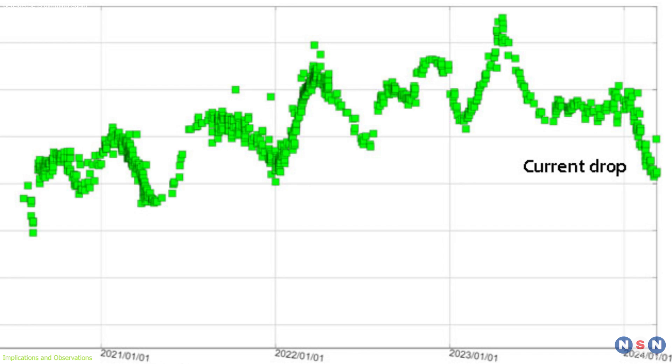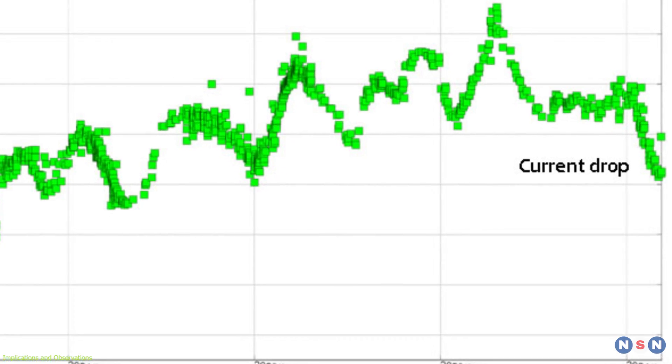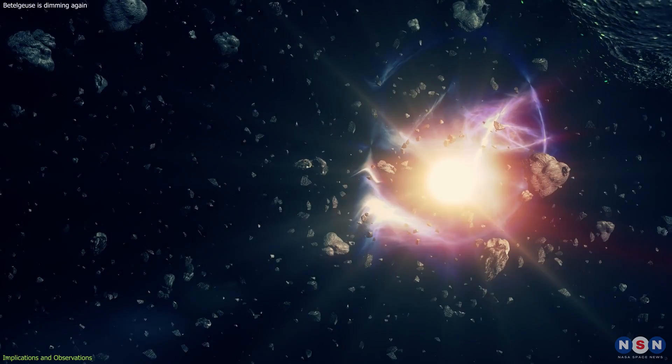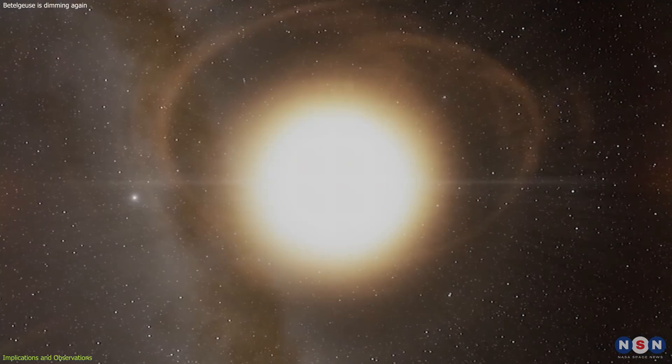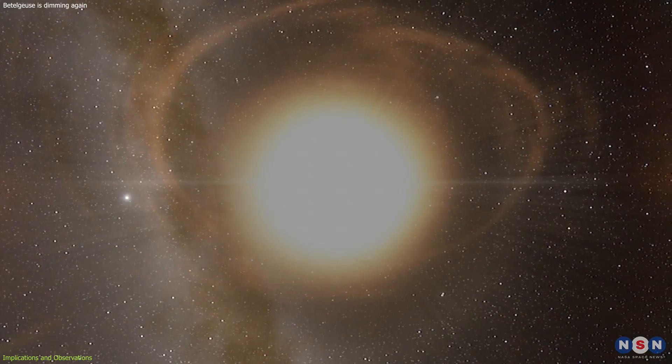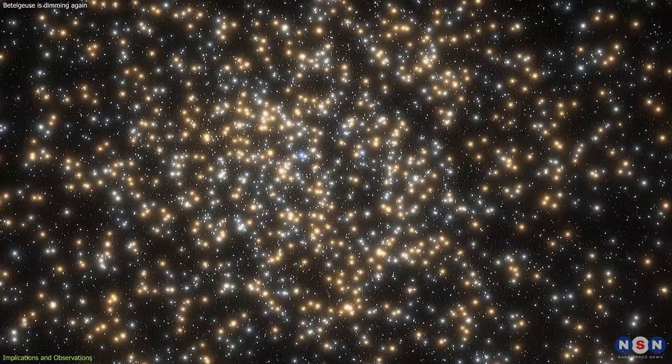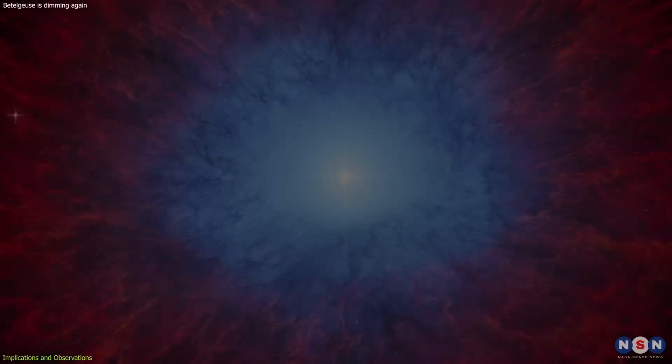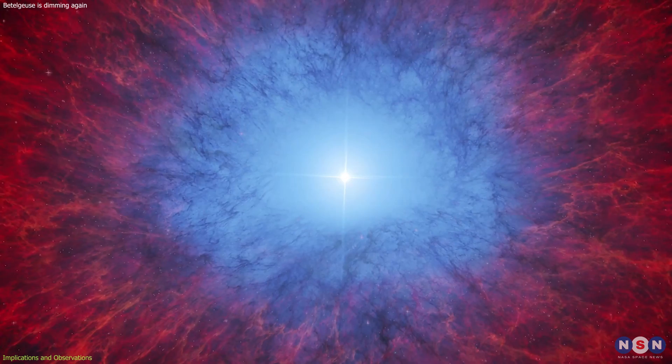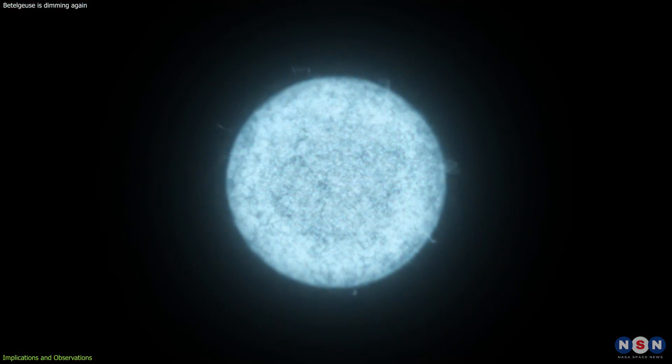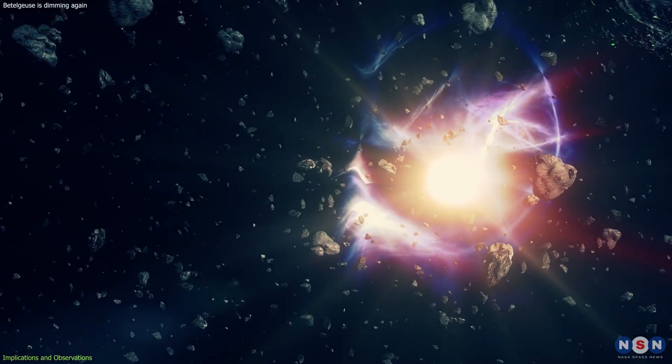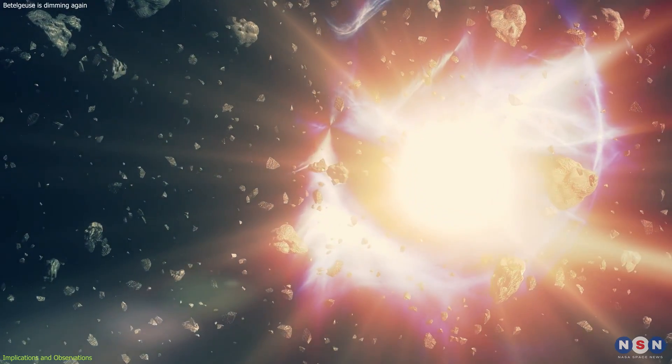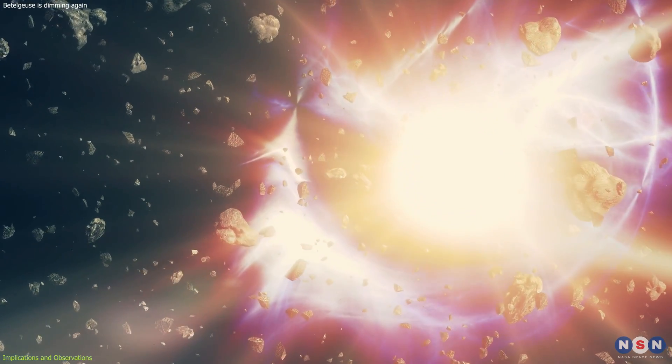The current dimming of Betelgeuse has reignited interest in the star's behavior and its potential supernova. While the exact cause of this dimming is still being investigated, it serves as a reminder of the dynamic nature of stars and the ongoing processes occurring within them. Betelgeuse's variability and the possibility of witnessing a supernova in our lifetime make it a fascinating subject of study.